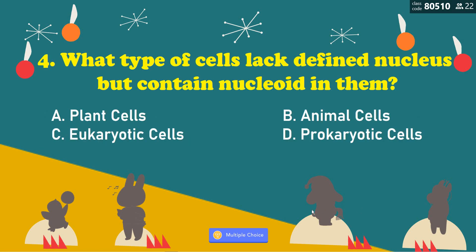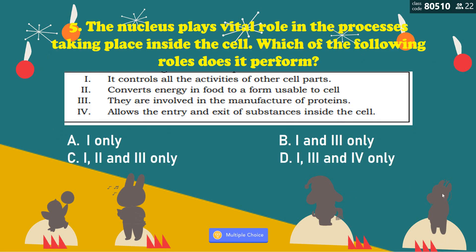Number 4: What type of cells lack defined nucleus but contain nucleoid in them? A, plant cells; B, animal cells; C, eukaryotic cells; D, prokaryotic cells. That is also correct — it is letter D, prokaryotic cells.